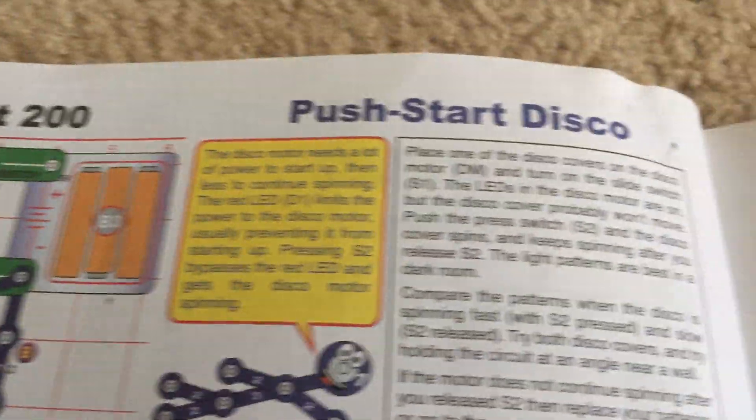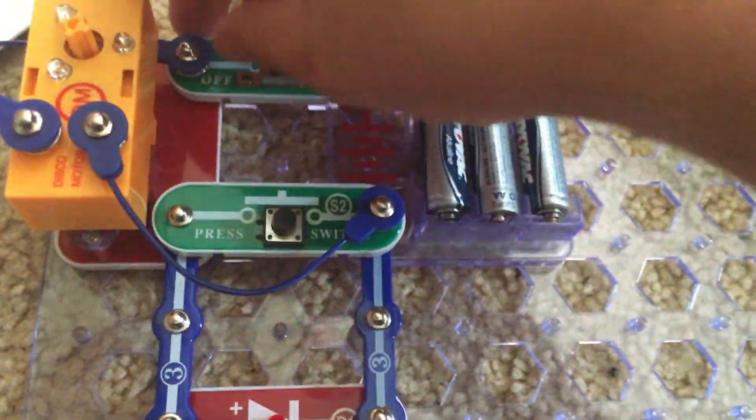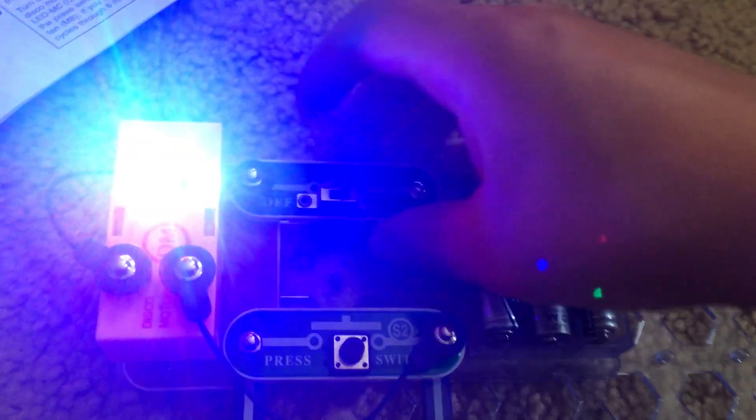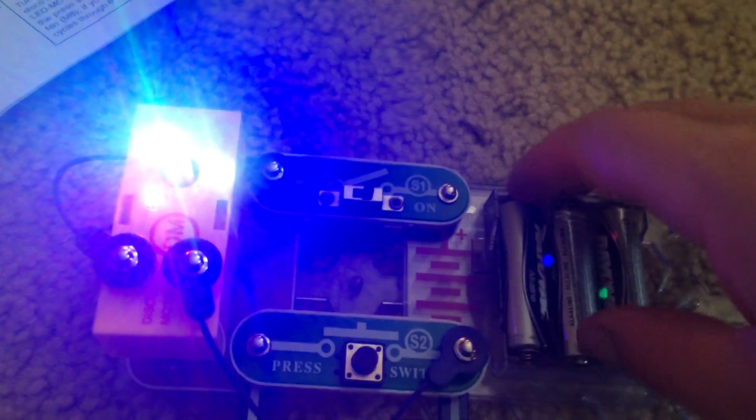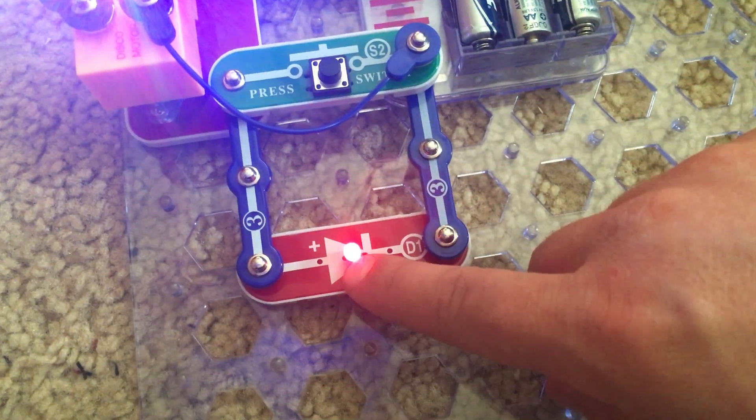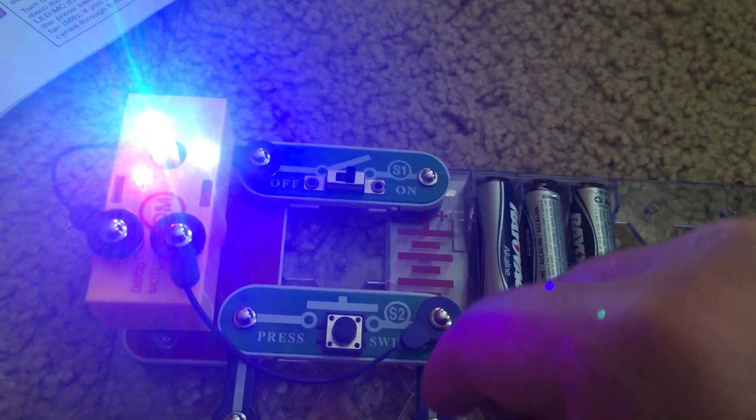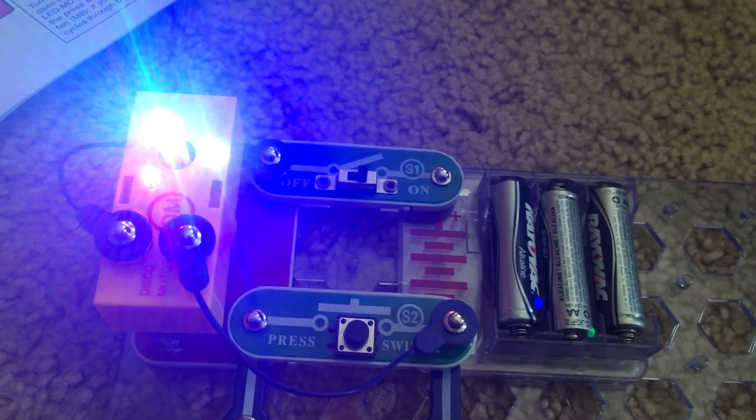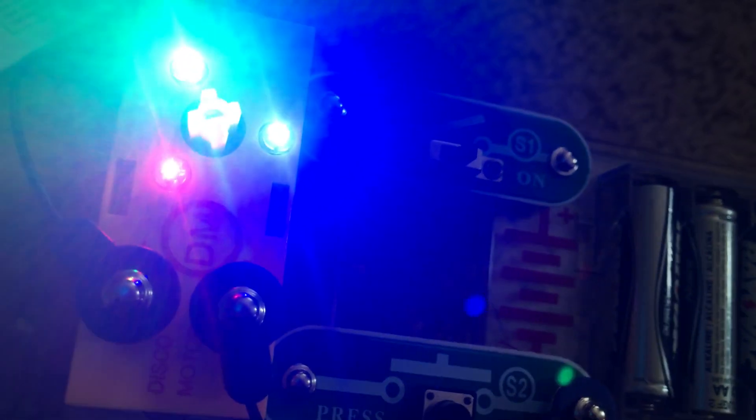Project 200 is push start disco. We are going to turn on the slide switch and the disco motor lights up, but it may not spin. We have the red LED here as well. We are going to push the press switch. And when you release it, the disco motor actually continues to spin at a very slow speed.